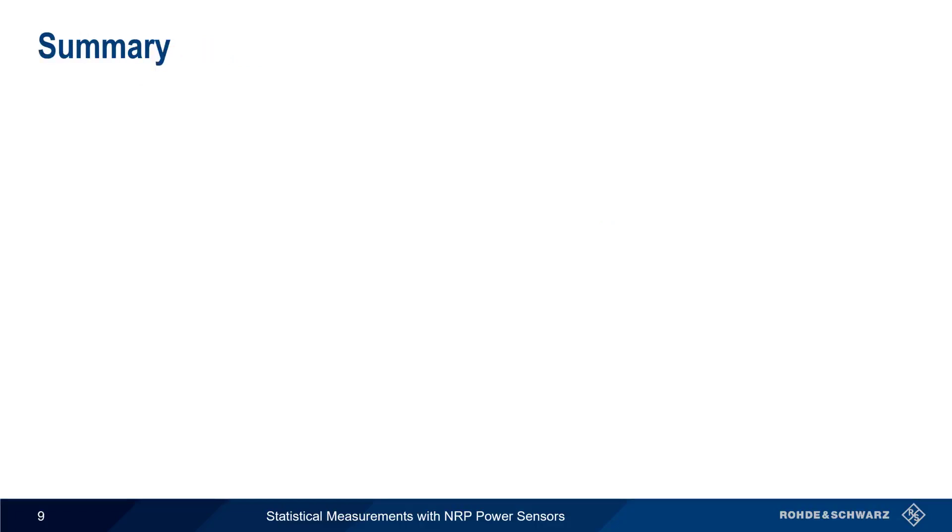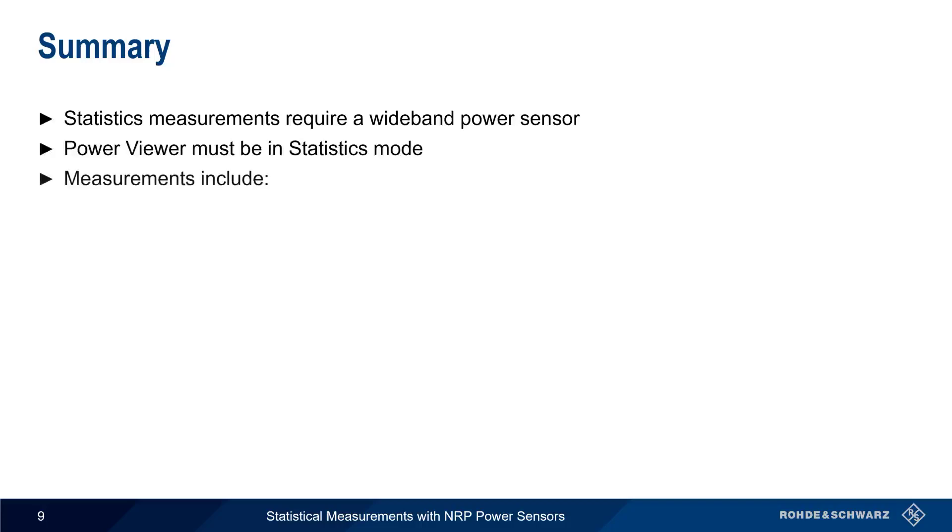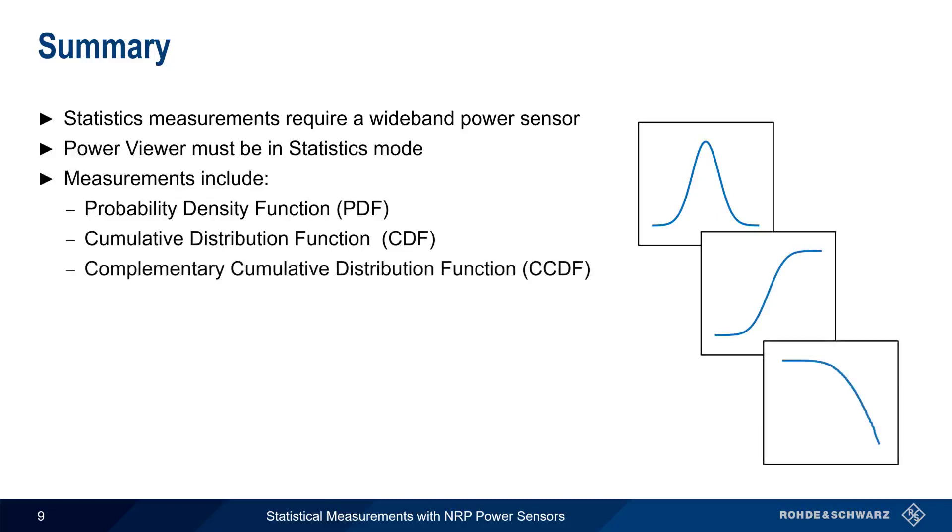Let's end with a brief summary. Statistical measurements require the use of a wideband power sensor, such as the NRP Z8x series. And in order to make statistical measurements, PowerViewer must be running in statistics mode. The three supported measurements are the probability density function, the cumulative distribution function, and the complementary cumulative distribution function, or CCDF.